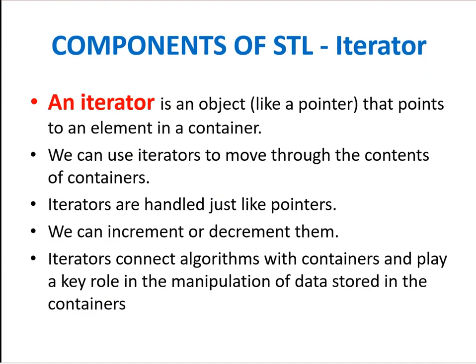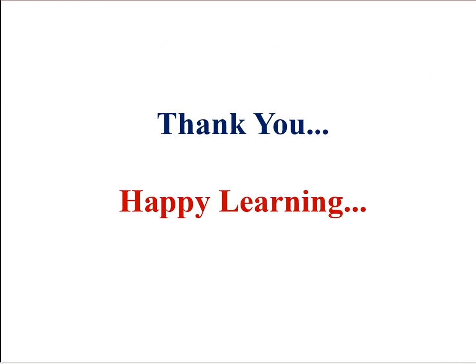Iterators are objects like pointers — or more than pointers — that point to an element in a container. We can use iterators to move through the contents of the container with the help of algorithms. Iterators are handled just like pointers; we can increment or decrement them. There are different types of iterators, which we will see in detail in another lecture. Iterators connect algorithms with containers and play a key role in the manipulation and processing of data stored in a container. Thank you, happy learning.